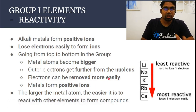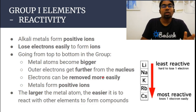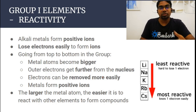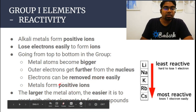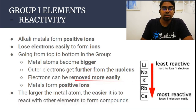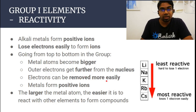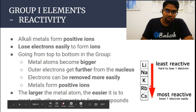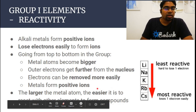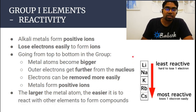All reactions involve movement of electrons — gain of electrons, loss of electrons, or sharing of electrons. If an element loses electrons easily to form ions, then it is also more reactive. So as we go down the group, it becomes more and more reactive. Caesium will be more reactive than potassium, sodium, or rubidium. The larger the metal, the easier it is to react with other elements to form compounds. So reactivity increases down the group.